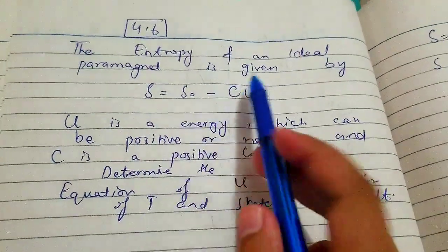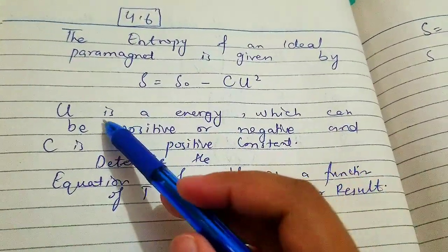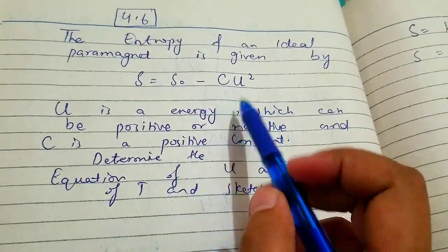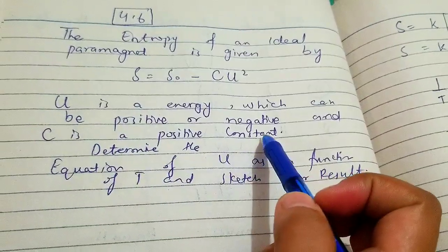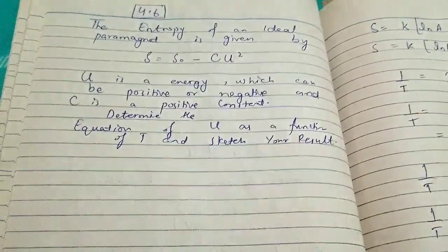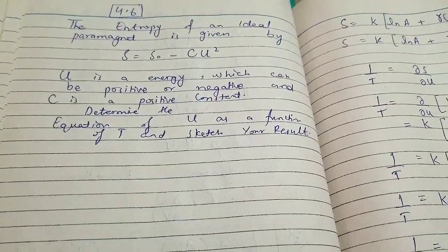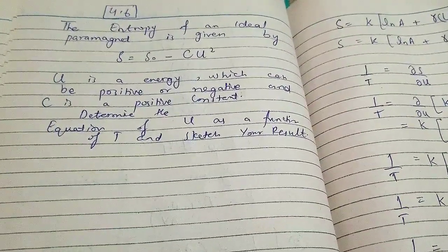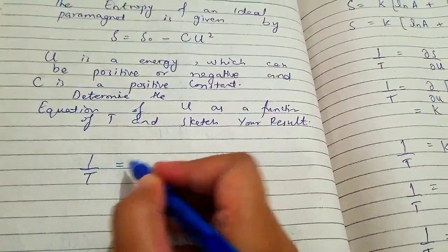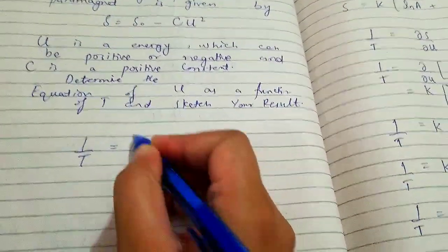Problem 4.6: the entropy of an ideal paramagnet is given. The entropy S is given, and U is energy which can be positive or negative. C is a positive constant — C will always be positive. We need to determine the equation of U as a function of T and sketch the result. This is related to problem 4.5, which we have done before, and we will find the relationship between temperature and U using the equation of state in thermodynamics. We will use the formula: 1/T = (∂S/∂U) at constant volume.